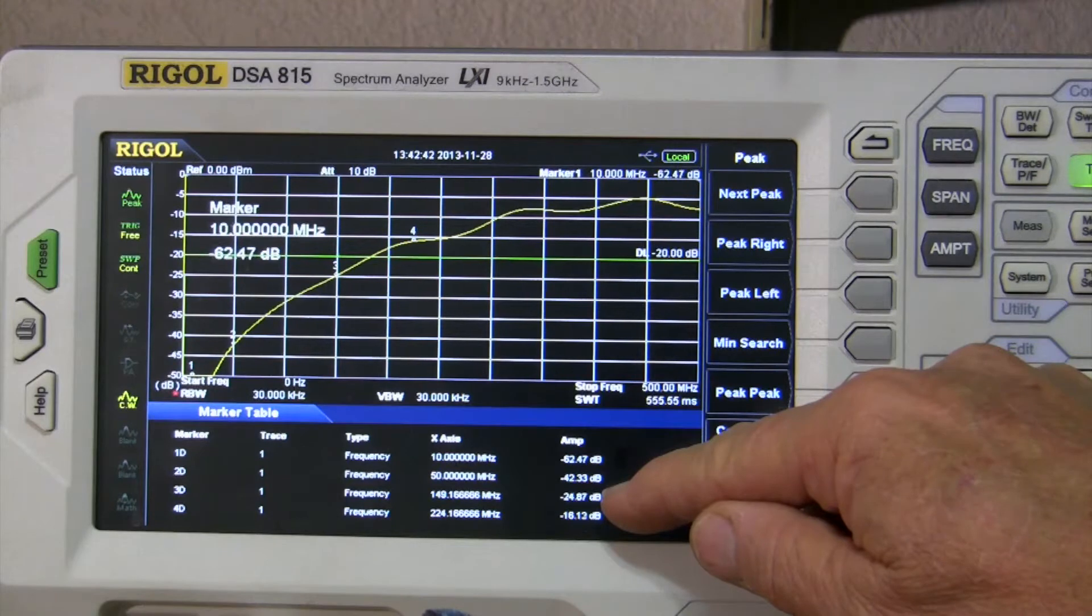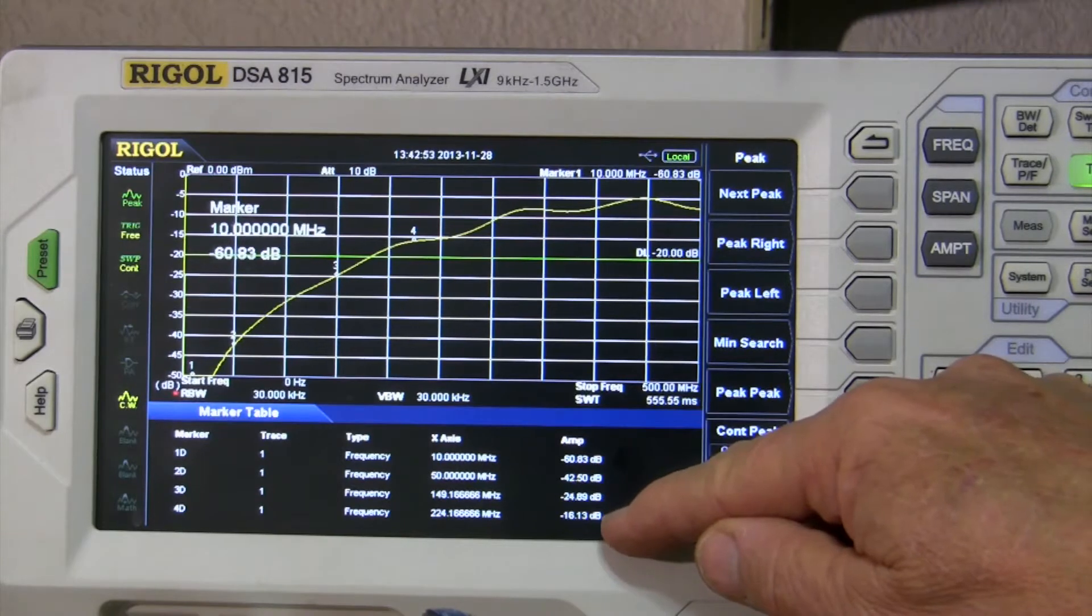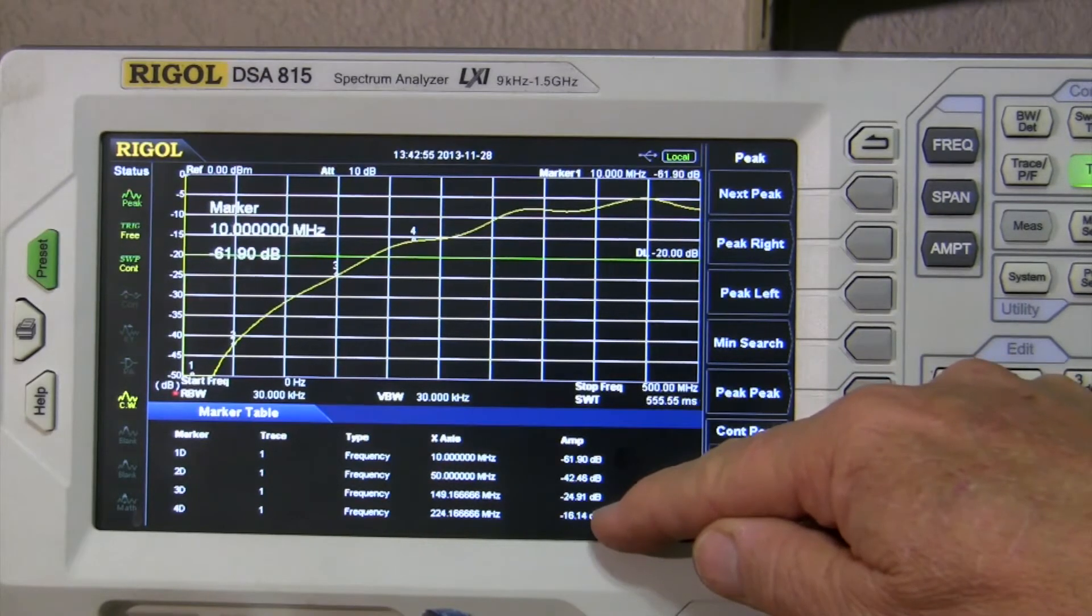And the 149 megahertz, it's about 25 dB, which is okay, it's not great, but might be adequate depending on what you're doing with the switch. But I think you're pushing your luck when you're up here at 224 megahertz. I think you'd want more than 16 dB of isolation.